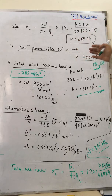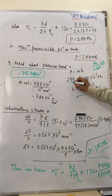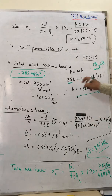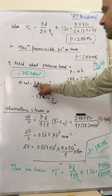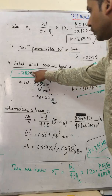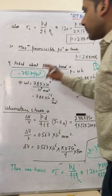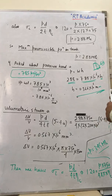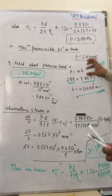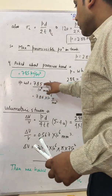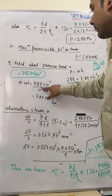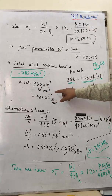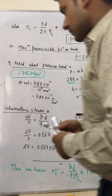The pressure head is the pressure expressed in terms of the head of that particular liquid. The specific weight given is 7.85 kN/m³. Converting units: 7.85 kN becomes 7.85 × 10³ N, and 1 m³ is converted to mm³ giving 10⁹ mm³.